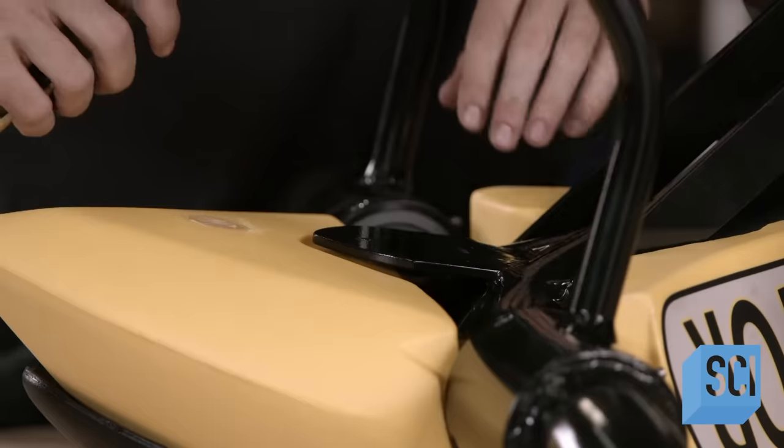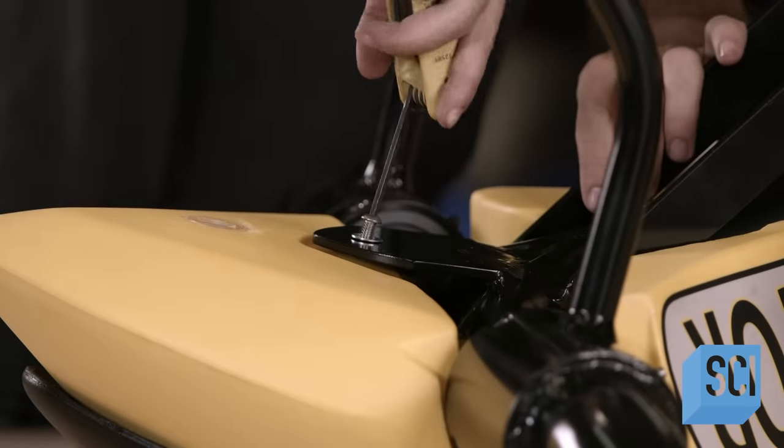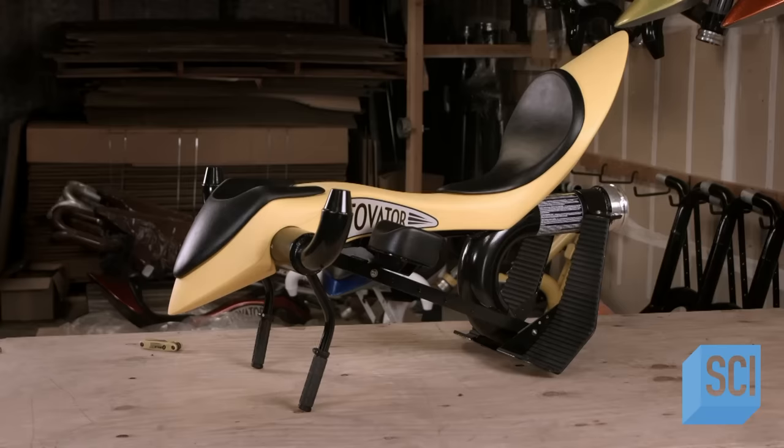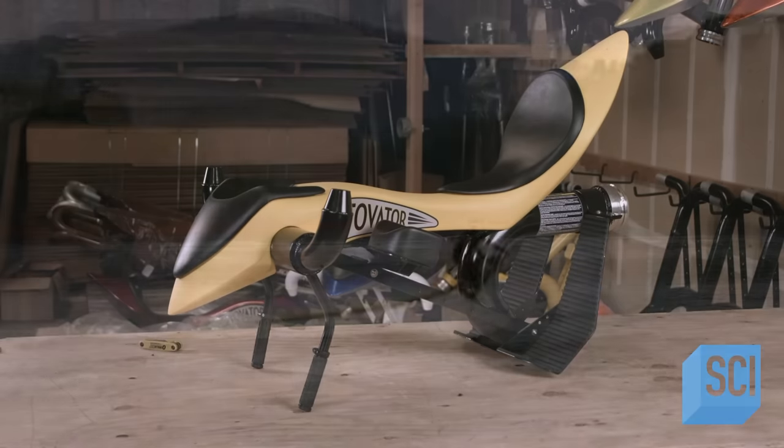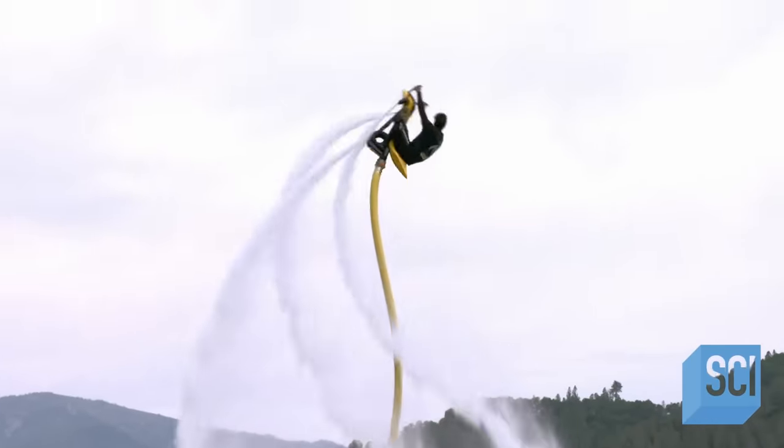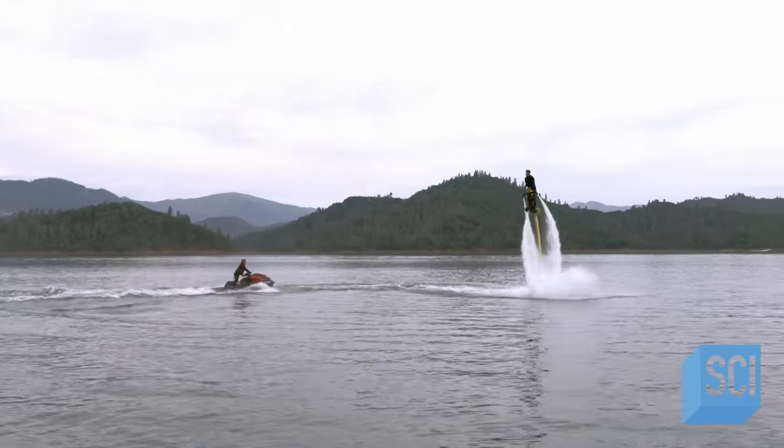The completed water bicycle weighs 30 pounds. Once connected to a jet ski with the fire hose, this water bike flies at a speed of up to 20 miles per hour. By maneuvering the jet nozzles, it does backflips, multiple spins, and even dives 20 feet underwater.